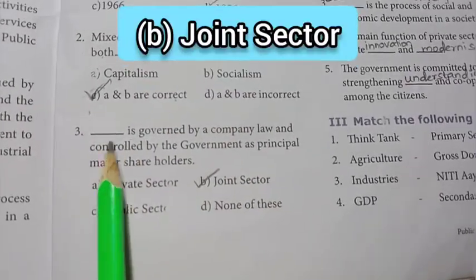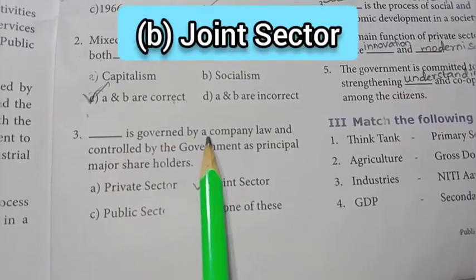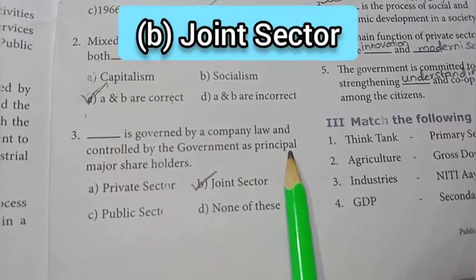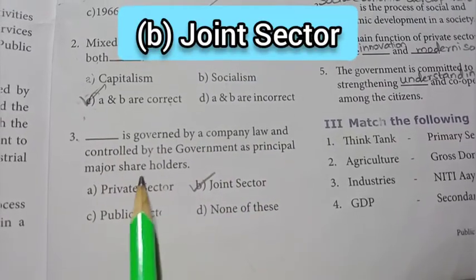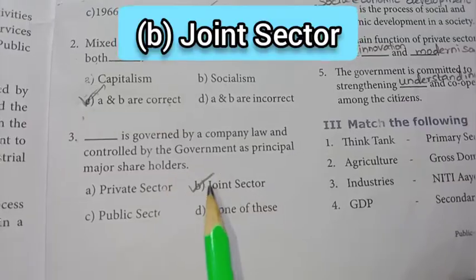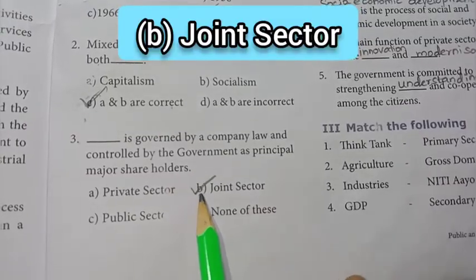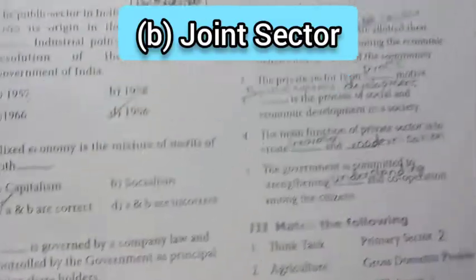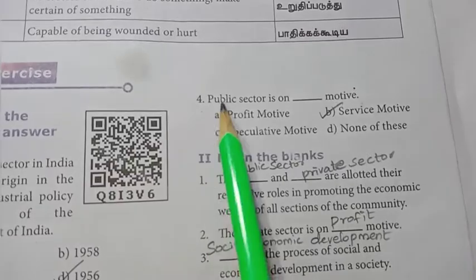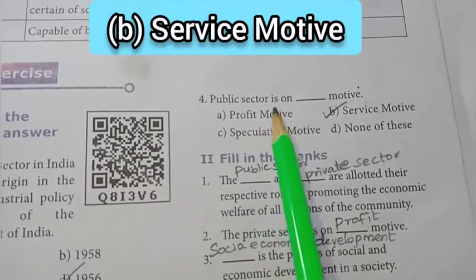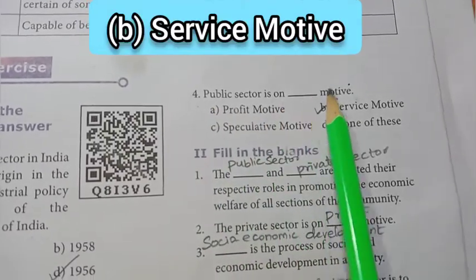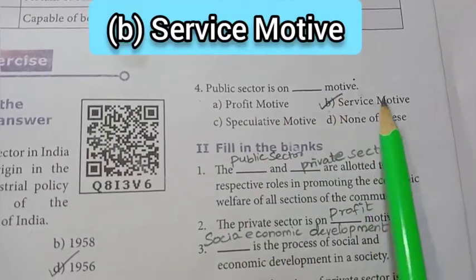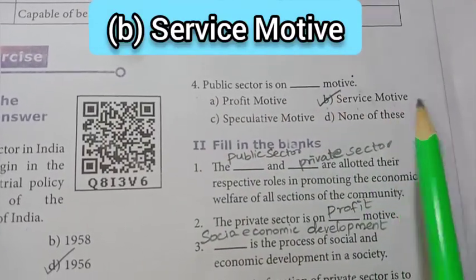Third one: dash is governed by a company law and controlled by the government as principal major shareholders. The answer is option B — joint sector. Fourth one: public sector is on dash motive. Option B — service motive — is the answer.